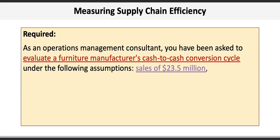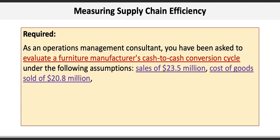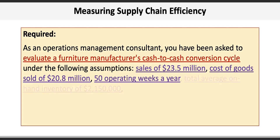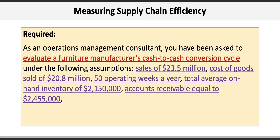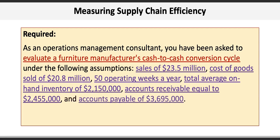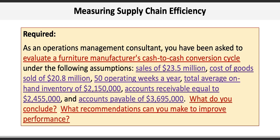Sales of $23.5 million, cost of goods sold of $20.8 million, 50 operating weeks per year, total average on-hand inventory of $2,150,000, accounts receivable equal to $2,455,000, and accounts payable of $3,695,000. Then we're asked to identify what we conclude and what recommendations we can make to improve performance.